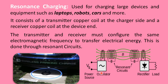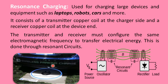The power is fed to the oscillator, which oscillates at a designated frequency based on the resonant circuits at the transmitter end. At the receiver end, the energy is fed through a rectifier to the load. This is mainly used for wireless charging of vehicles like four-wheelers and two-wheelers.